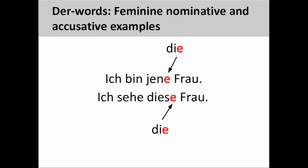Let's take a look at the feminine forms. In the first sentence on this slide, ich bin jene Frau (I am that woman), you can see that the -e ending on jen- resembles the feminine definite article in the nominative case. In the sentence right below, ich sehe diese Frau (I see this woman), the -e ending on dies- looks like the feminine definite article in the accusative case.